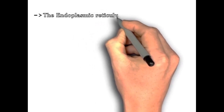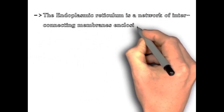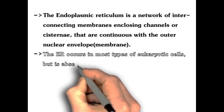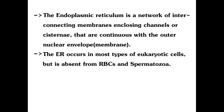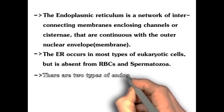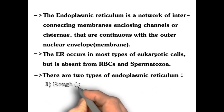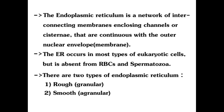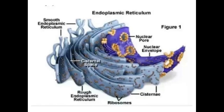The endoplasmic reticulum is a network of interconnecting membranes enclosing channels or cisterns that are continuous with the outer nuclear envelope. It occurs in most types of eukaryotic cells but is absent from RBCs and spermatozoa. There are two types: the first is rough, that is granular, and the second is smooth, that is agranular. As you can see in this picture, granular rough endoplasmic reticulum and agranular smooth endoplasmic reticulum and its continuation with the nuclear envelope.